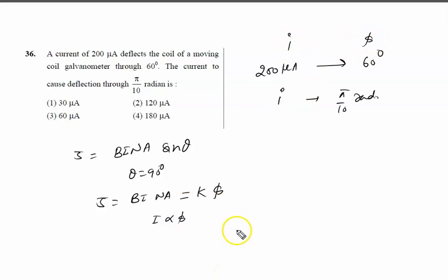This is I and this is φ. Now we will use i1, i2, φ1, φ2. So you can say i2 by i1 is given by φ2 upon φ1. i2 is i, i1 is 200 microamperes.